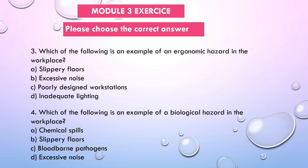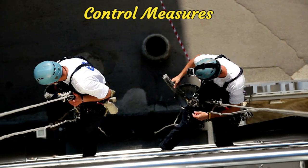Question 3: Which of the following is an example of an ergonomic hazard in the workplace? A) Slippery floors, B) Excessive noise, C) Poorly designed workstations, D) Inadequate lighting. Question 4: Which of the following is an example of a biological hazard in the workplace? A) Chemical spills, B) Slippery floors, C) Blood-borne pathogens, D) Excessive noise. Choose the correct answers to make sure you understand today's content.